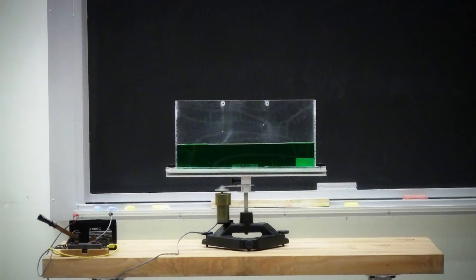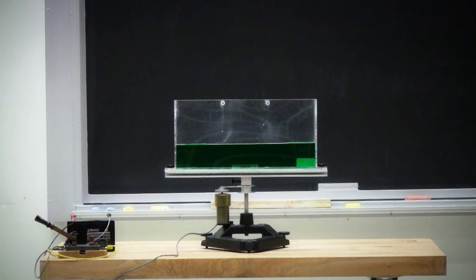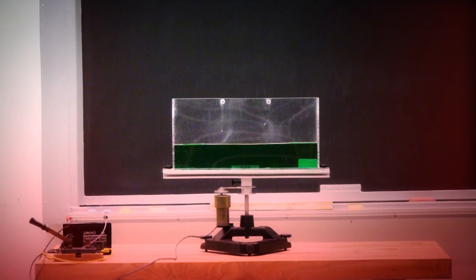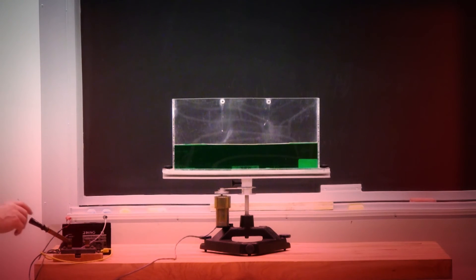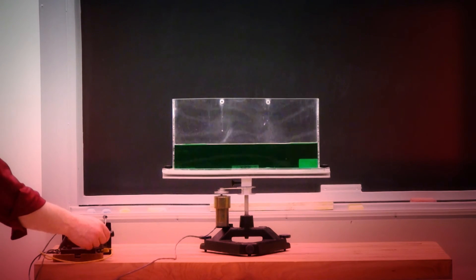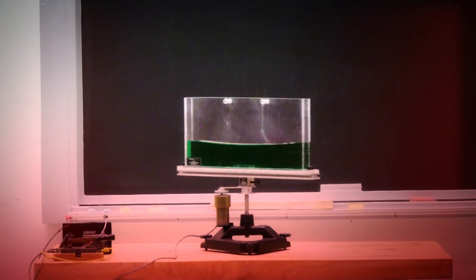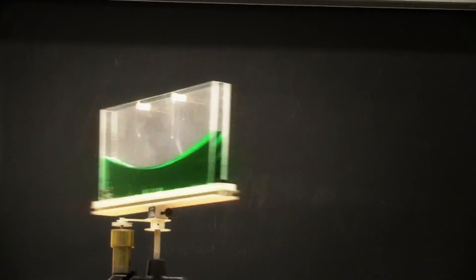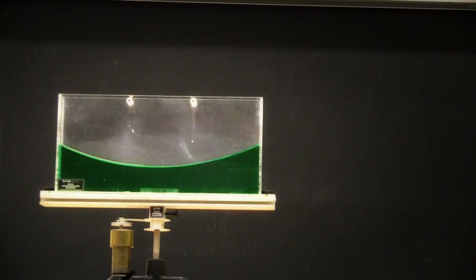We begin spin casting at room temperature with no rotation. Our glass is a rectangular slab. We then raise the temperature until the glass becomes molten and then turn on the rotation. Note that our liquid quickly assumes a parabolic shape. We now turn off the heat and allow the glass to slowly cool and solidify in this shape.